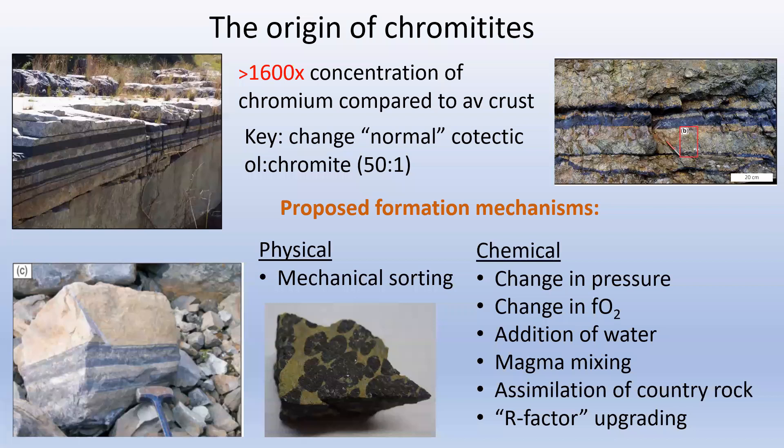To add context, the first thing we need to consider in terms of the origin of chromatites is what actually is at play here. Basically, to form a pure chromatite, we need something like a 1600-fold enrichment of chromium compared to normal crustal abundances. In more normal mafic magmas, what we usually get is olivine, or olivine plus chromite, crystallizing at co-tactic proportions of something like olivine to chromite of 50 to 1. The question arises: how do we change that situation such that chromite becomes the predominant crystallizing mineral?